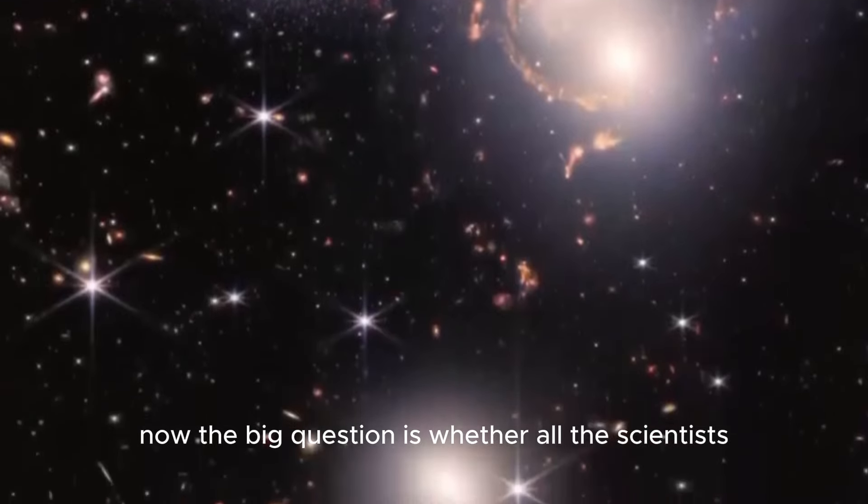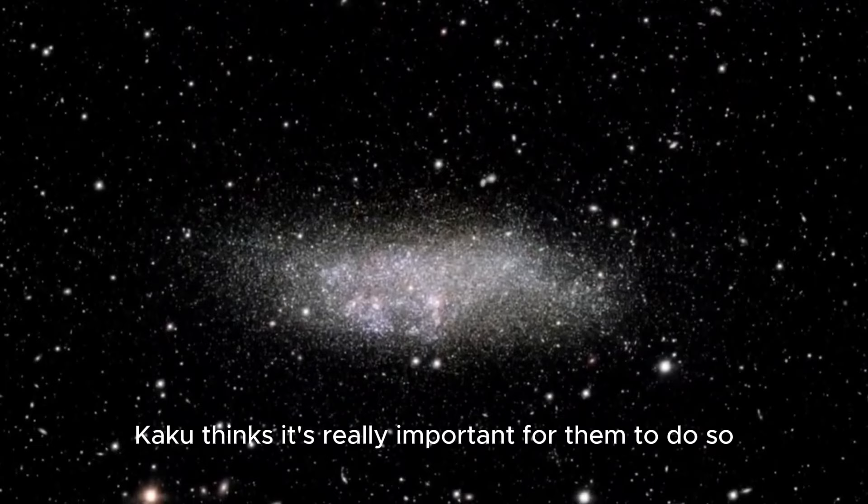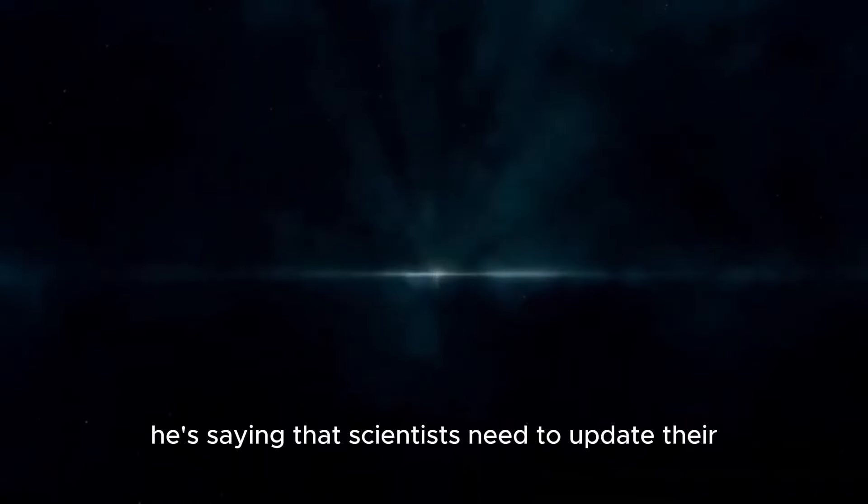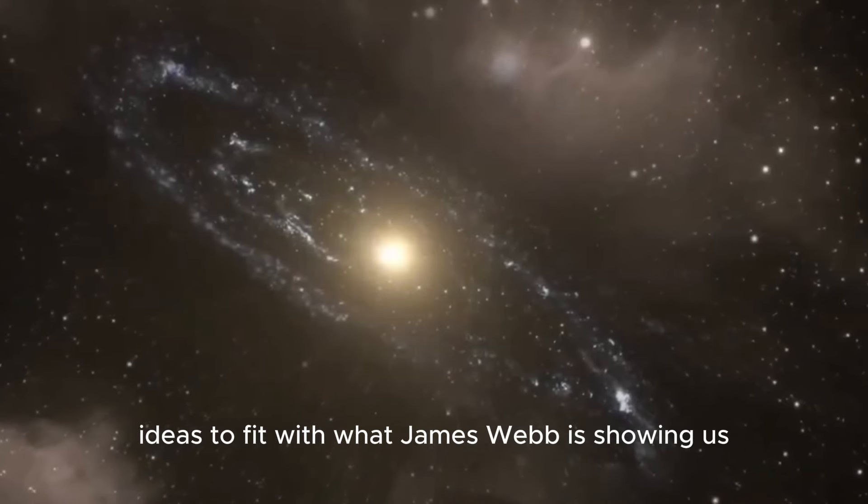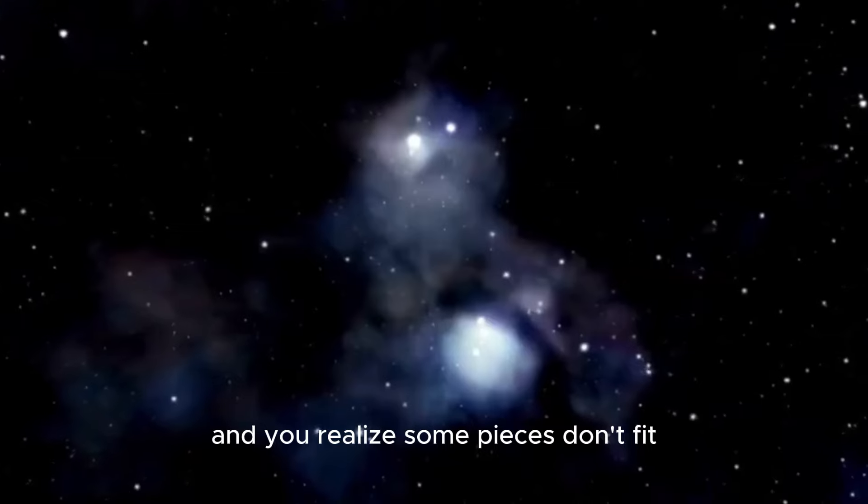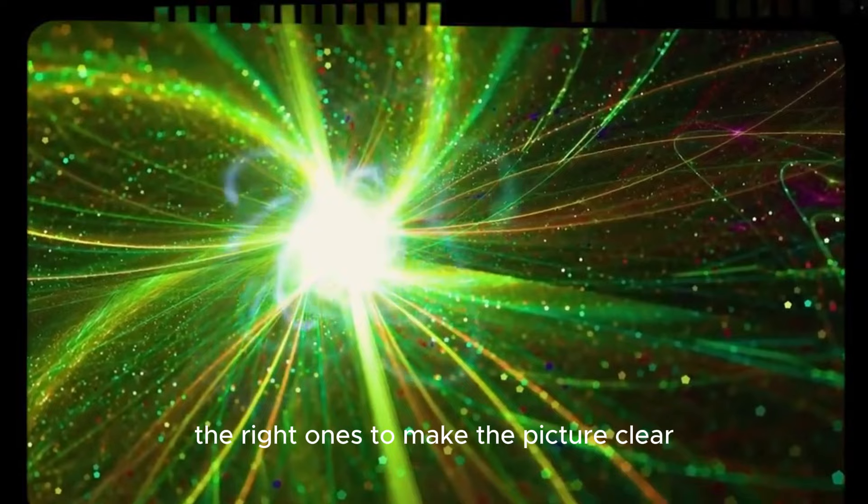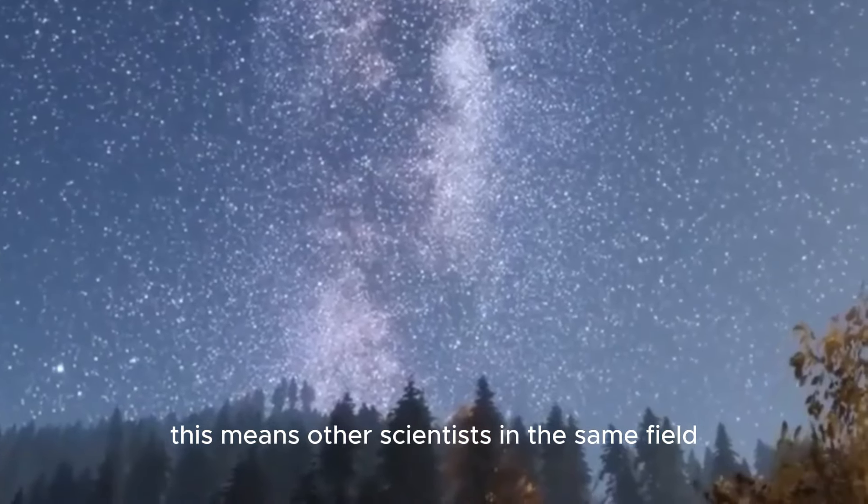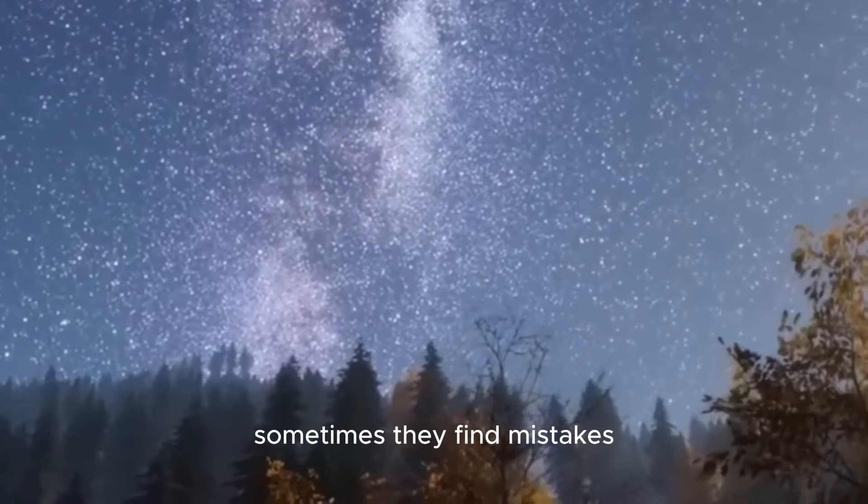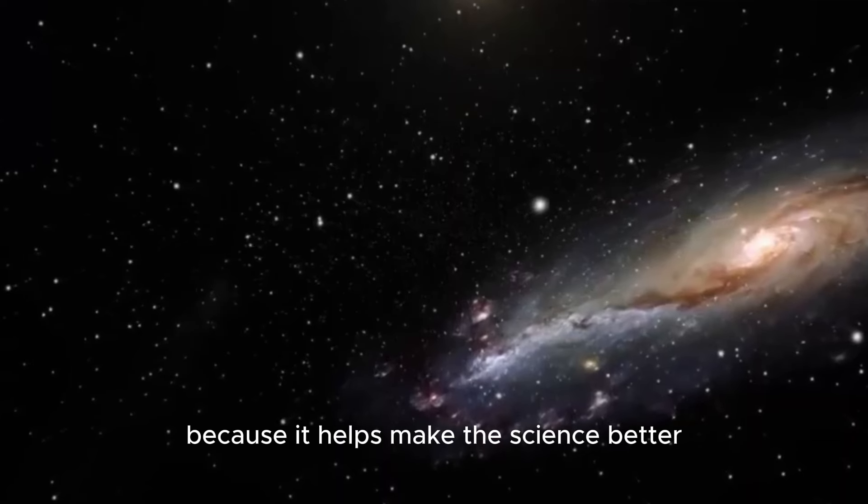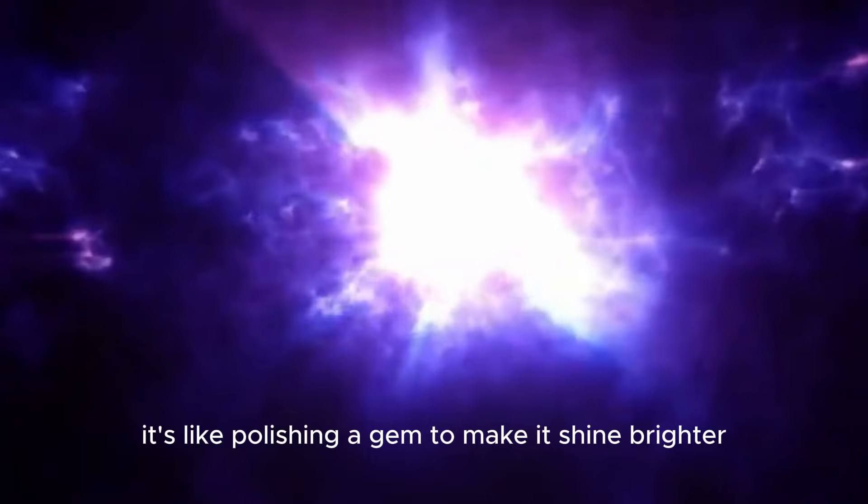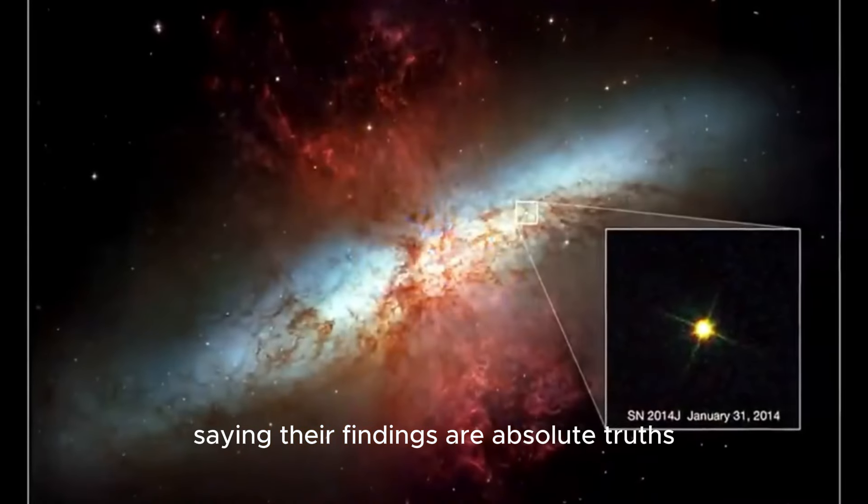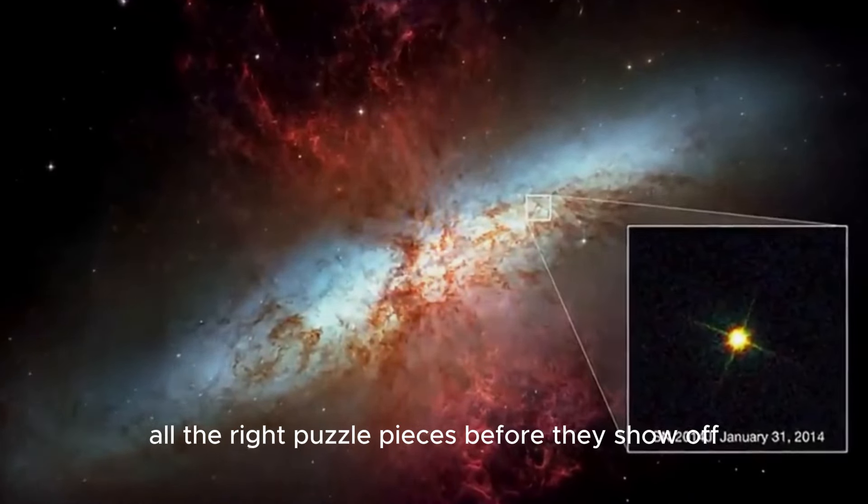Now, the big question is whether all the scientists will agree on what these amazing discoveries mean. Kaku thinks it's really important for them to do so because the universe doesn't lie. He's saying that scientists need to update their ideas to fit with what James Webb is showing us. Right now, lots of new discoveries are going through a process called peer review. This means other scientists in the same field are checking the research to make sure it's solid. Sometimes they find mistakes, but that's okay because it helps make the science better. So as more discoveries go through this careful checking process, scientists will probably be more careful about saying their findings are absolute truths.